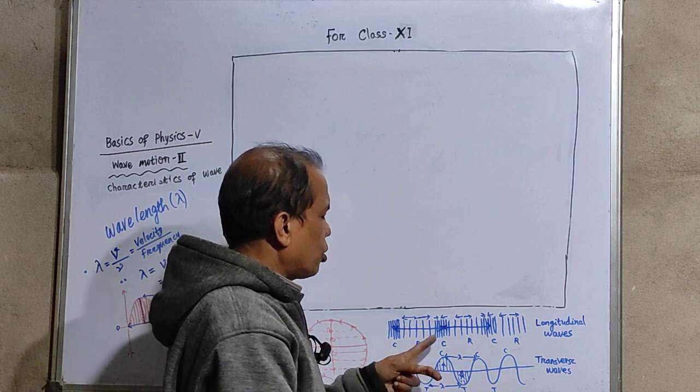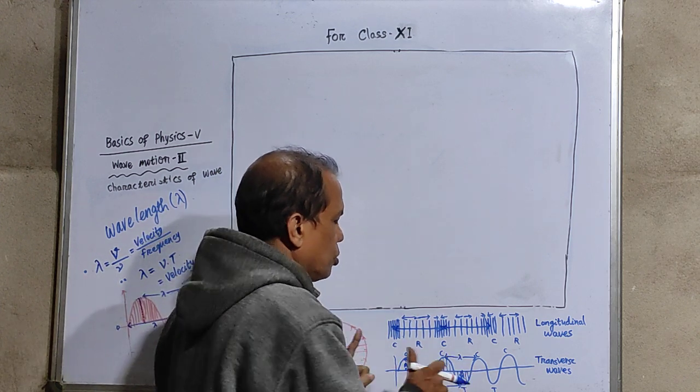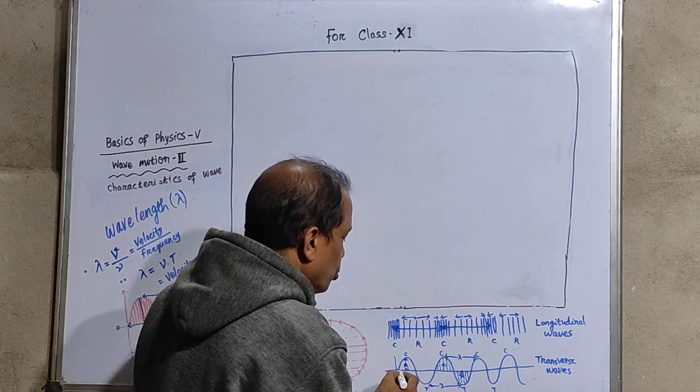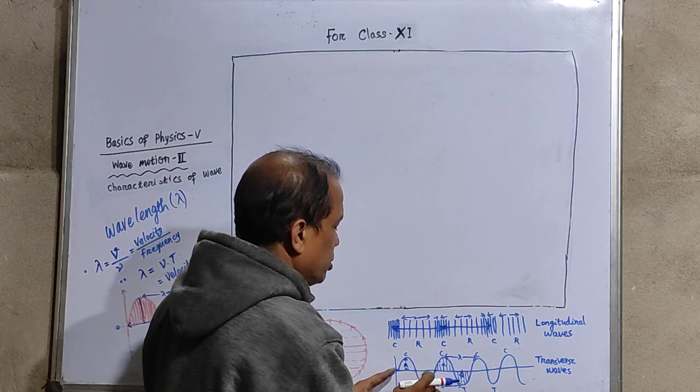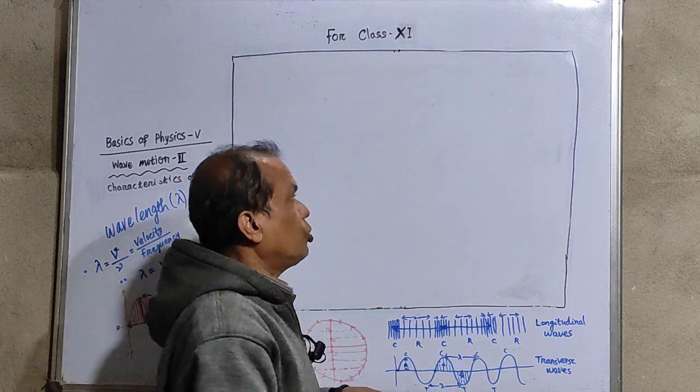For a transverse wave, there are crests and troughs. So between any two crests, any two troughs, any two nodes at same phase or antinodes at same phase, this length is also known as wavelength.